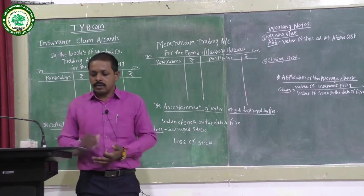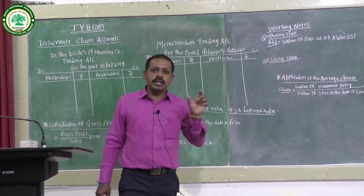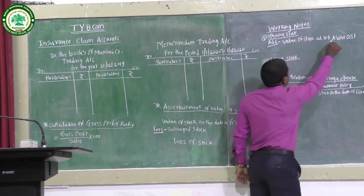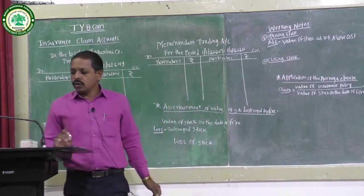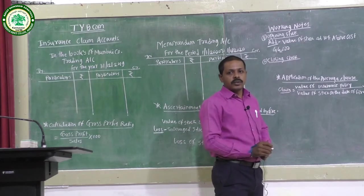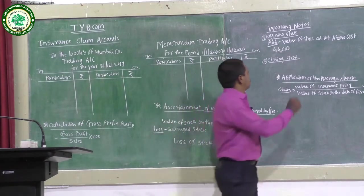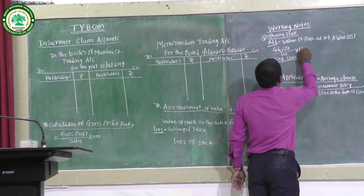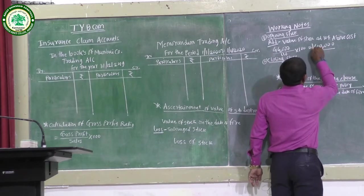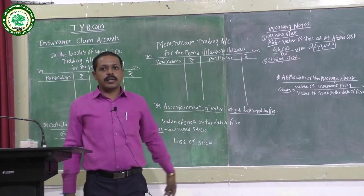Closing stock on 31st December 2019 is Rs.30,800 and opening stock on 1st January 2019 is Rs.44,000. Since the company values stock at 10% above cost, we convert opening stock to cost: 44,000 × 100/110 = Rs.40,000. So the opening stock at cost is Rs.40,000.